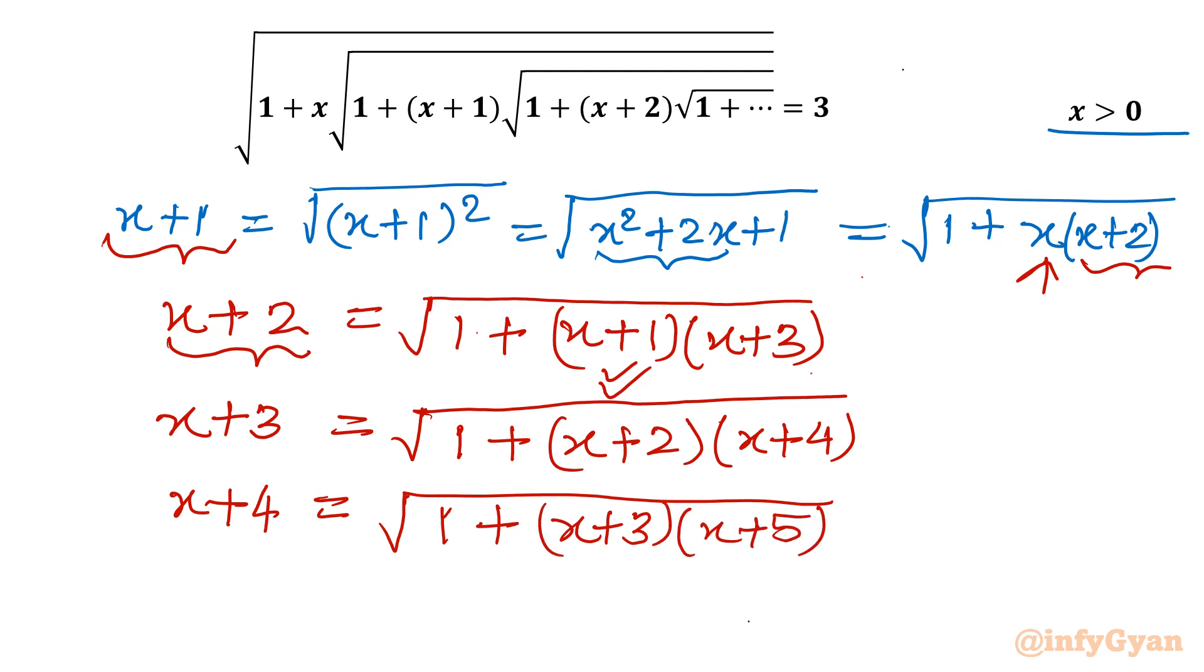Let us consider LHS of our equation. I will begin with the same result. x plus 1 equal to the square root of - I will write 1 plus x times x plus 2. Now consider x plus 2 separately. So I will write now 1 plus x, and x plus 2 I will write my formula again.